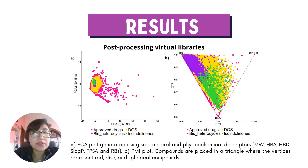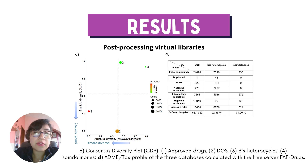The importance of characterizing generated compounds in terms of molecular and structural diversity to ensure quality, novelty, and synthetic viability of the designed compounds is also highlighted. Here, we show the chemical space of generated libraries in terms of physicochemical properties and diversity metrics.